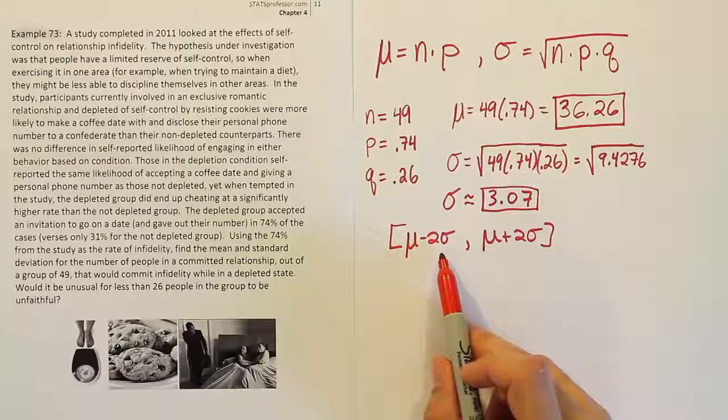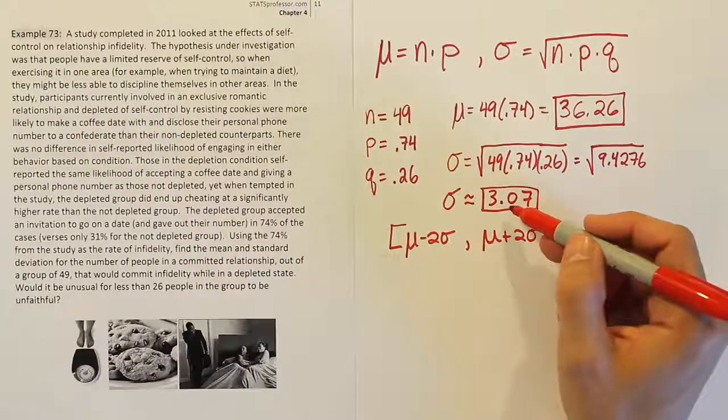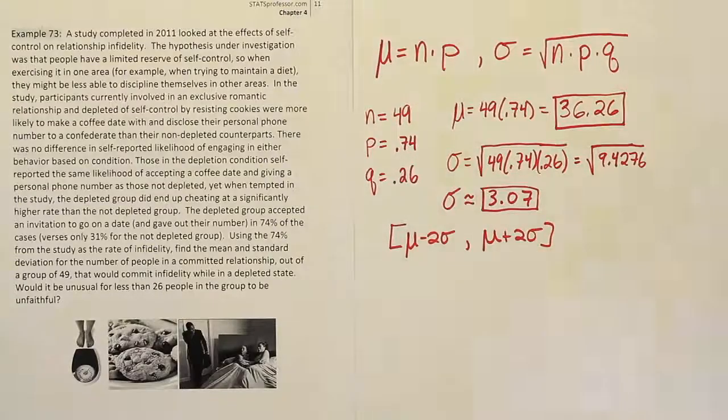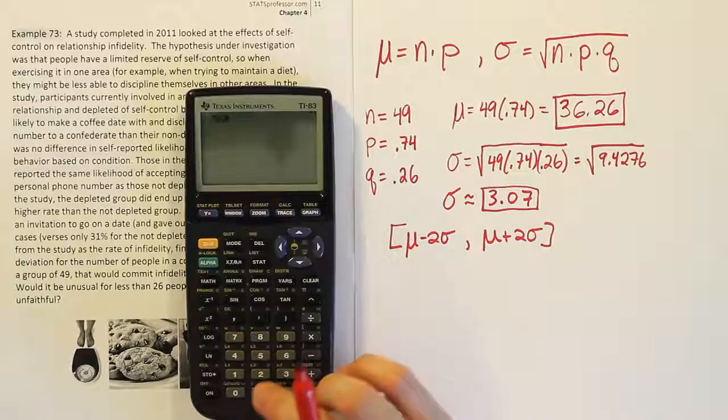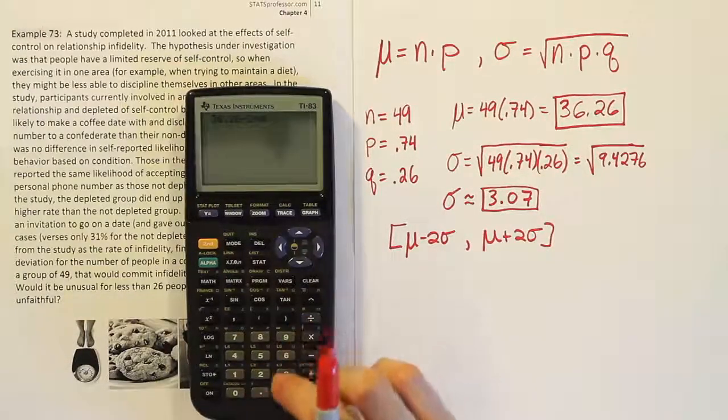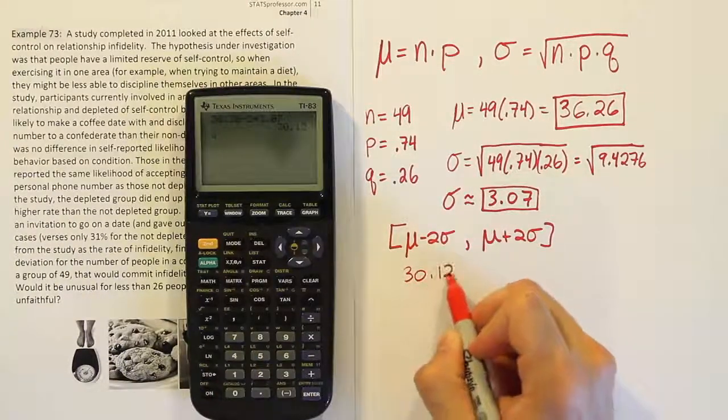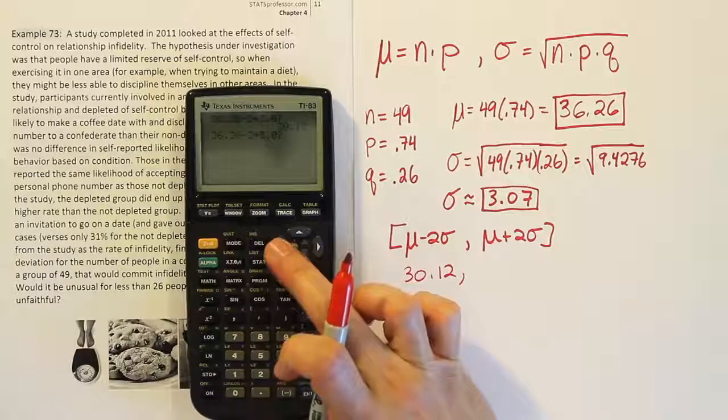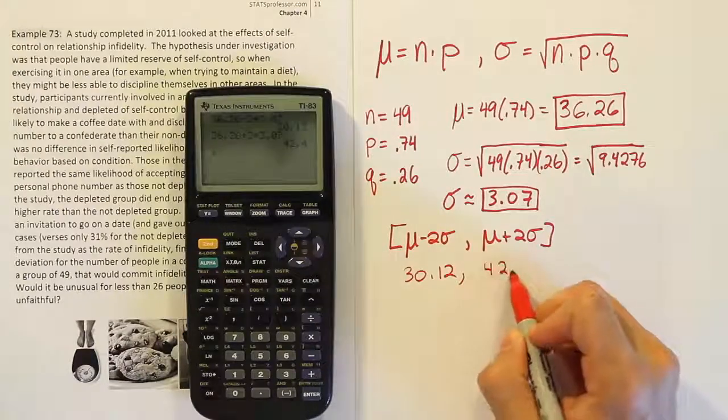That would be 36 basically minus two threes, right? So 36 minus 6 and 36 plus 6 essentially. I'm going to do it with the decimals though intact. So let's do that. Let's do 36.26 and I'm going to subtract 2 times 3.07. And when I do that, I get 30.12. And if I do it again, but this time I add two standard deviations to the mean. If I add two standard deviations, I get 42.4.